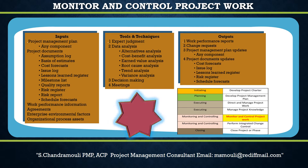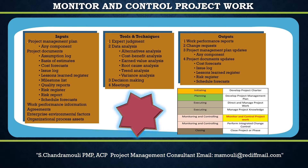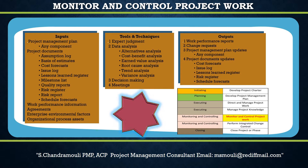The next output is Work Performance Reports. Work performance reports are the physical or electronic representation of work performance information compiled in project documents, intended to generate decisions, actions, or awareness. Note: all controlling processes create work performance information as output; only this overall controlling process creates work performance reports as output. The input for this process is work performance information from various controlling processes, collated to create the work performance report.